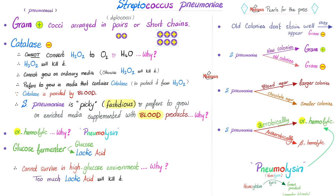Streptococcus pneumoniae does not have catalase. It cannot defend itself against hydrogen peroxide. That's why it does not grow on any medium — it requires the medium to provide catalase for it, because it lacks catalase.